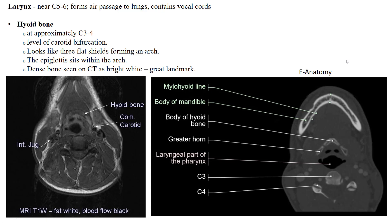Welcome to part two of the neck lecture. We're going to start talking about the larynx, which is the air passageway to the lungs. While the pharynx is the passageway from the nose and mouth to the esophagus, the larynx is the pathway between the oropharynx and nasopharynx into the trachea. It also contains the vocal cords.